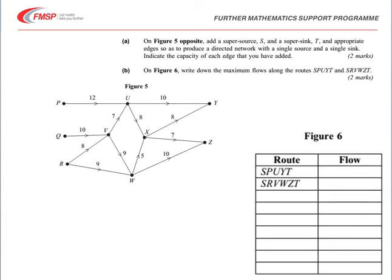So in the first part of the question, we're asked to put in a super source S and a super sink. On the diagram we need to add in S with directed arcs going to P, Q and R. The size of those are going to be sufficient to allow the flow in the following roads. So P to U is 12, therefore SP has to be 12 or at least 12. S to Q needs to be 10 and S to R needs to be a total of 8 plus 9, giving you 17.